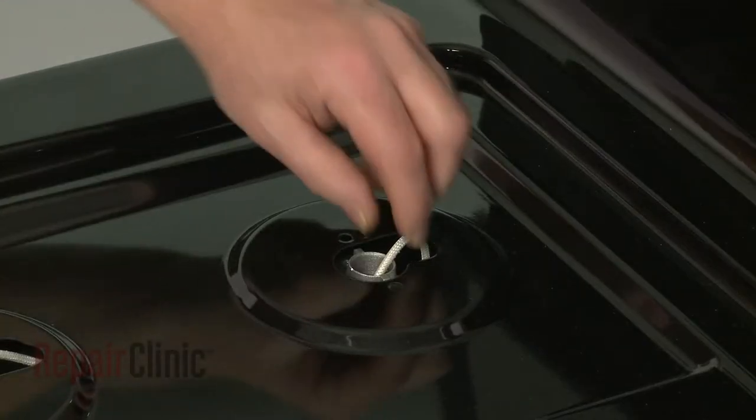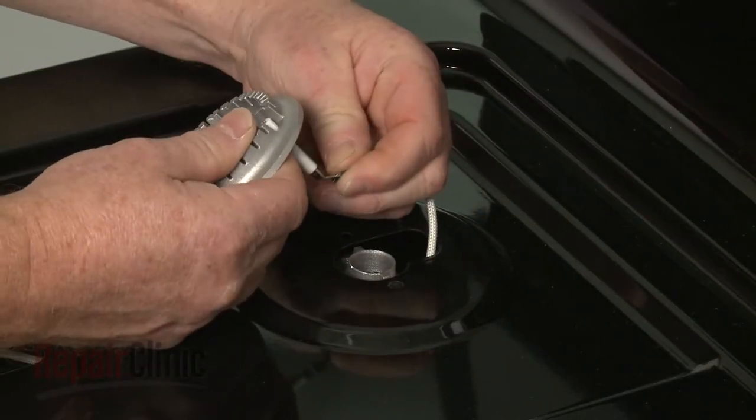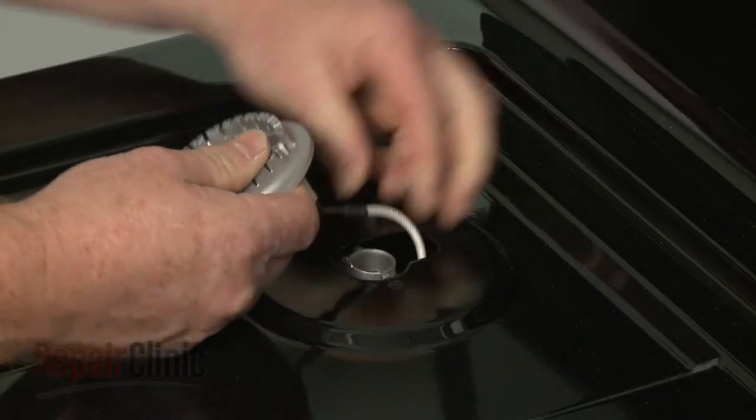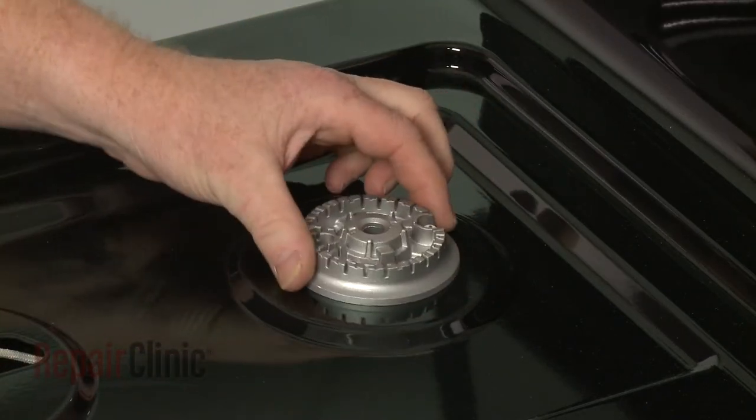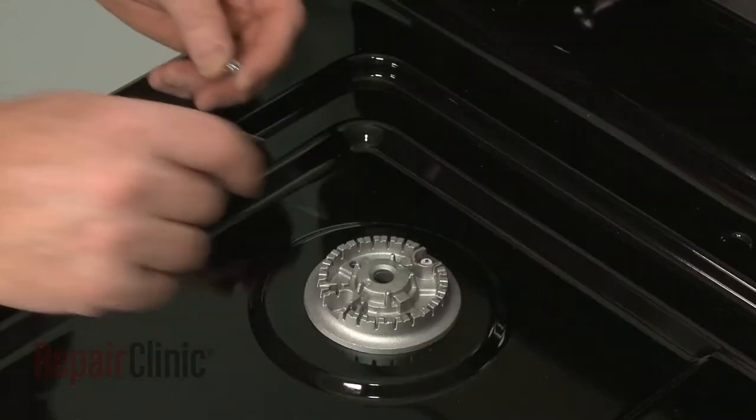When replacing the burner heads, first connect the spark wires to the surface igniters. Align the heads and re-thread the screws to secure.